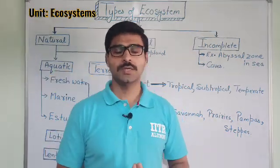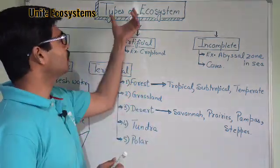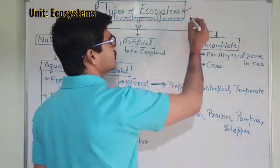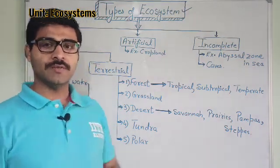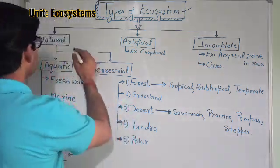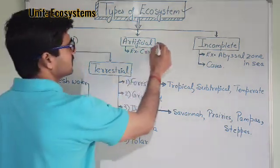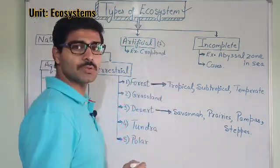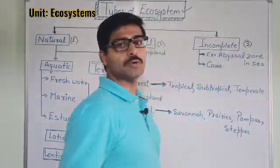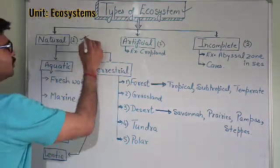Hello everyone, today I will explain the concept of ecosystem and the types or classification of ecosystems. Broadly, we can divide ecosystems into three different categories: first is natural ecosystems, second is artificial ecosystems, and the third category is incomplete ecosystems. Let us start with natural ecosystems.